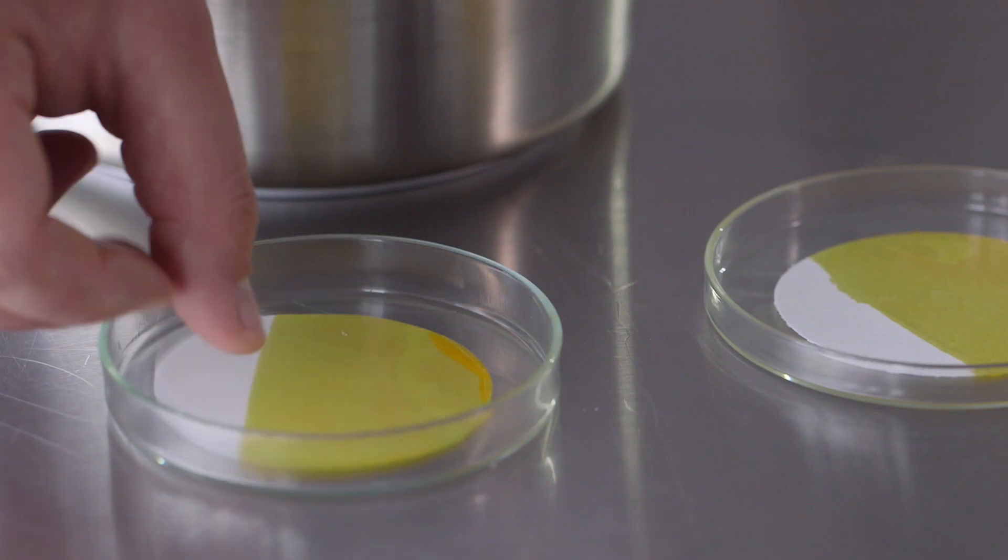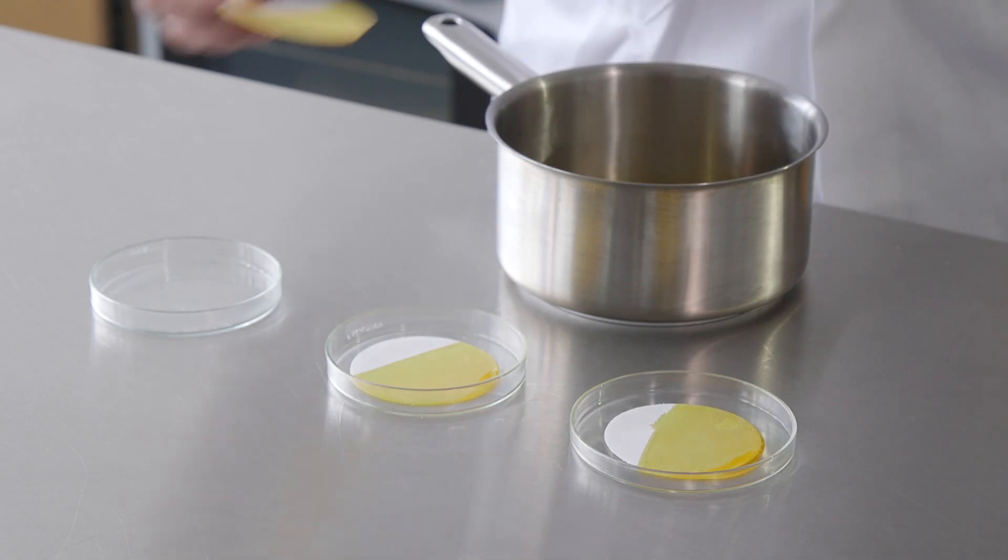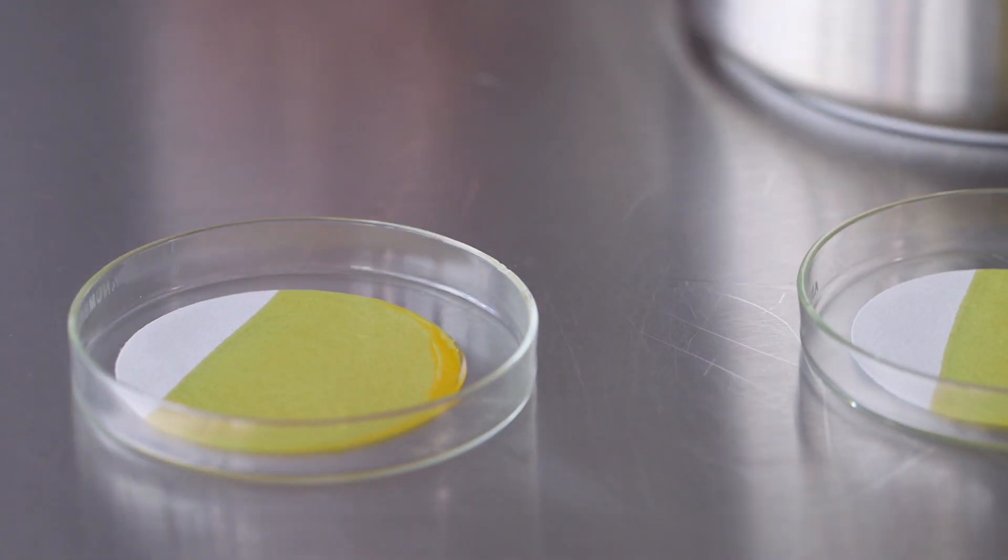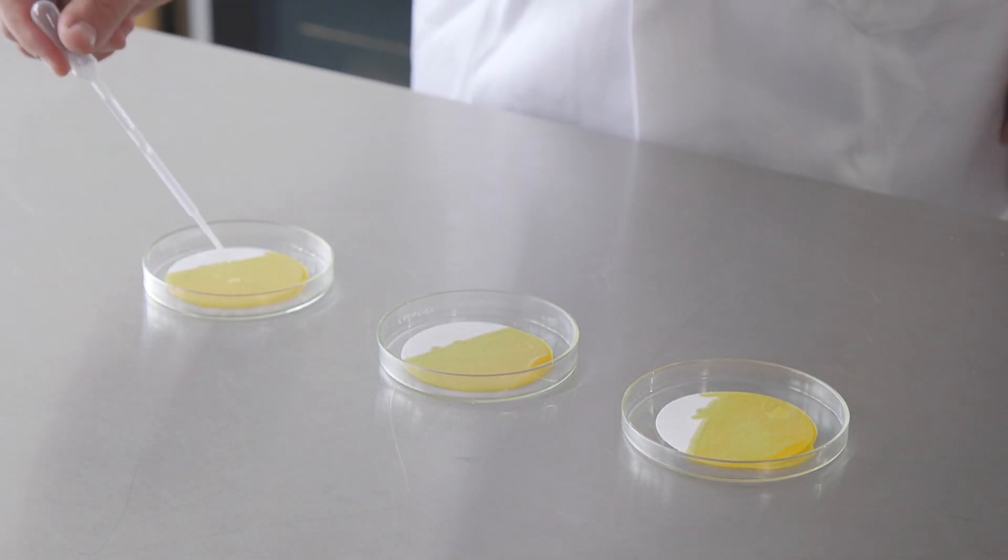The second experiment will look at the effect of chemicals on this process. As before, prepare some discs of beta-carotene colored fat and place them in petri dishes. This time, treat the dishes as follows.